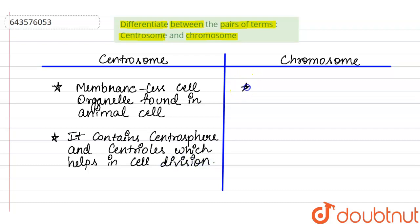But what is chromosome? Chromosome is a rod-like structure formed due to condensation of chromatin fibres.